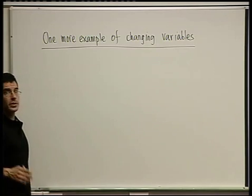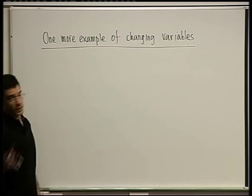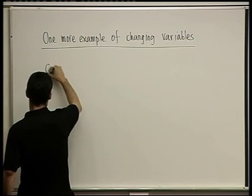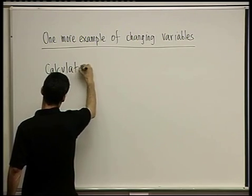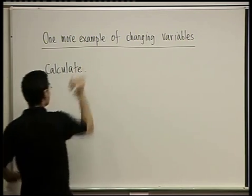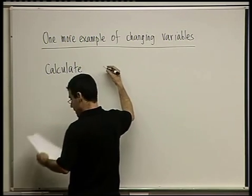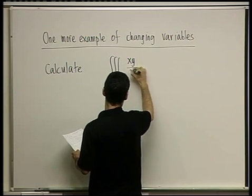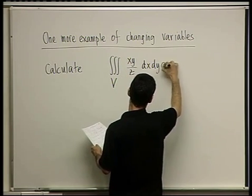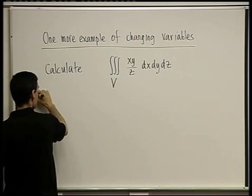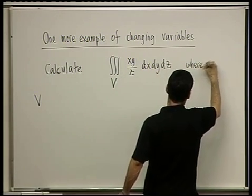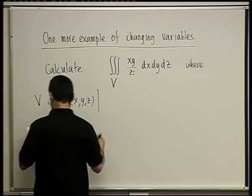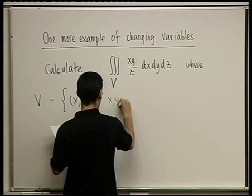Let's do one more example of changing variables. This one is not going to be standard spherical or cylindrical coordinates — it's going to be a special change of variables, but nothing too sophisticated. We want to calculate the triple integral over the domain V of the function xy divided by z, dx dy dz, where V is the solid given by all the points x, y, and z satisfying that x, y, and z are positive.